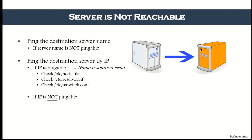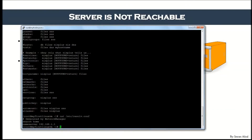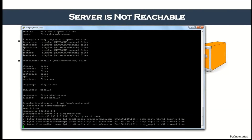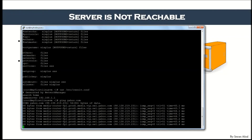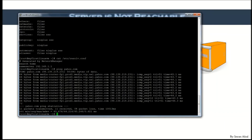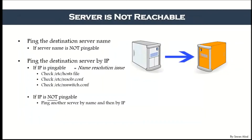Next: if IP is also not pingable — you ping with the server name and with the IP and nothing is working — then ping another server by name and by IP. Maybe the server you're trying to reach is actually down. I'll try 'ping yahoo.com' — yes, I can ping it. That means my computer is fine; there's definitely something wrong with Google or your destination server.